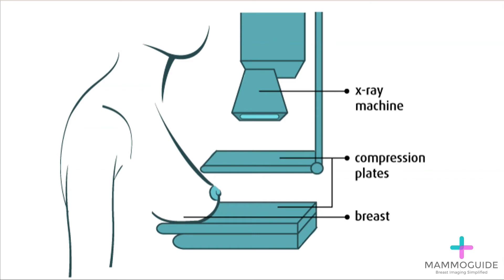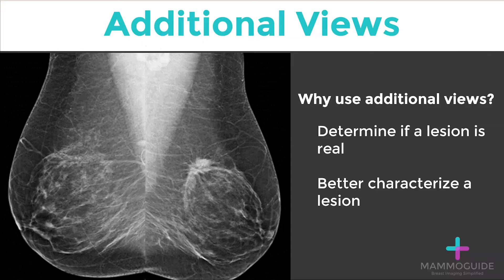The standard setup for performing a mammogram involves positioning the breast on a detector plate and applying a small amount of compression. The views performed for a screening mammogram include a cranial caudal and medial lateral oblique view, but oftentimes additional views are required to determine if a lesion is real or to better characterize an abnormality.